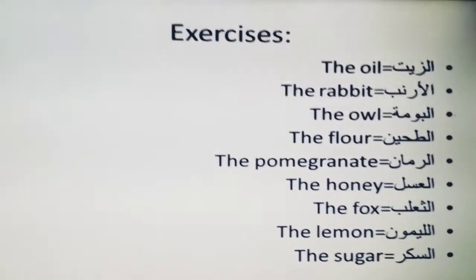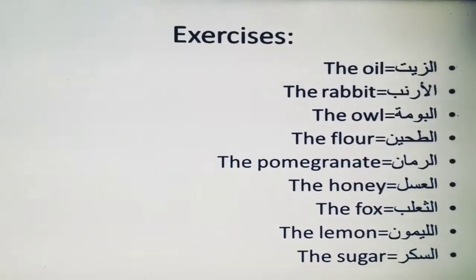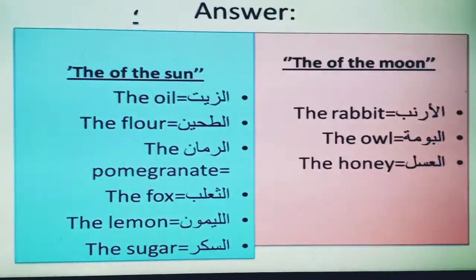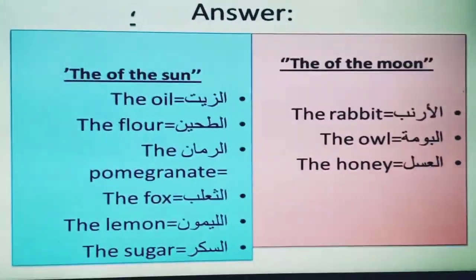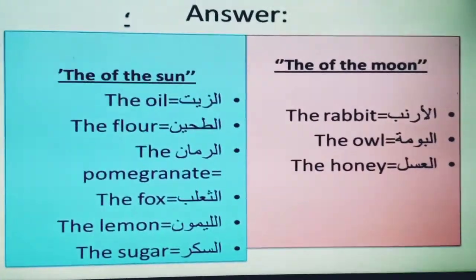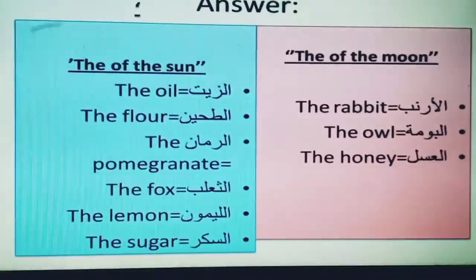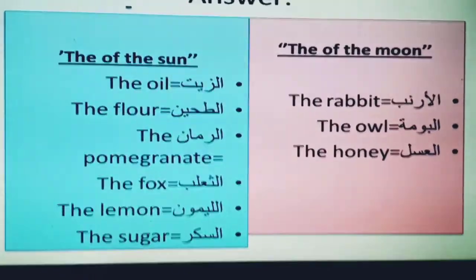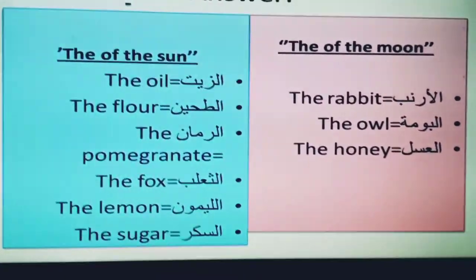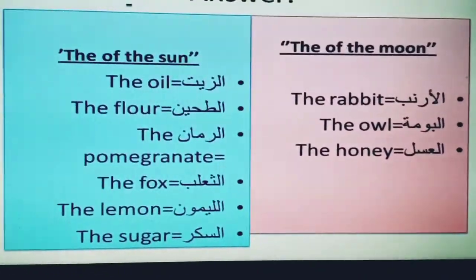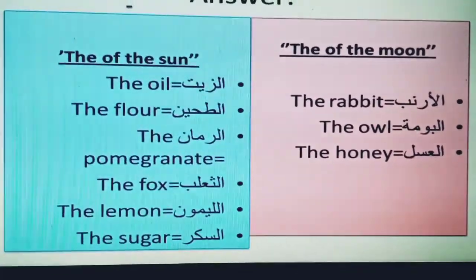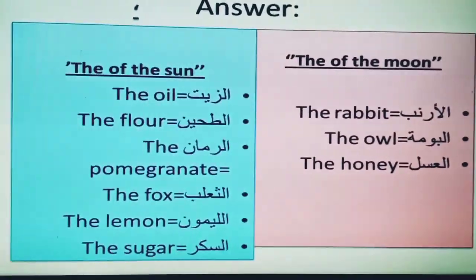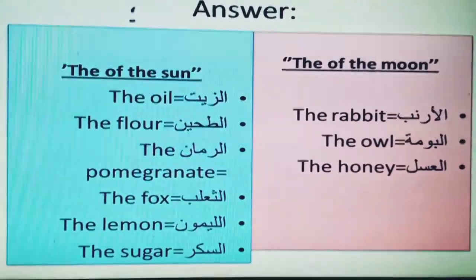Here are the answers. The moon letters (Al-Qamariyya): Al-Arnab (the rabbit), Al-Bum (the owl), Al-Asal (the honey). The sun letters (Al-Shamsiyya): Az-Zayt (the oil), At-Taheen (the flour), Ar-Rumman (the pomegranate), Ath-Tha'lab (the fox), Al-Laymun (the lemon), As-Sukkar (the sugar). I hope you've understood this grammar rule and can now pronounce Al correctly as either the sun or moon form. Bye for now!